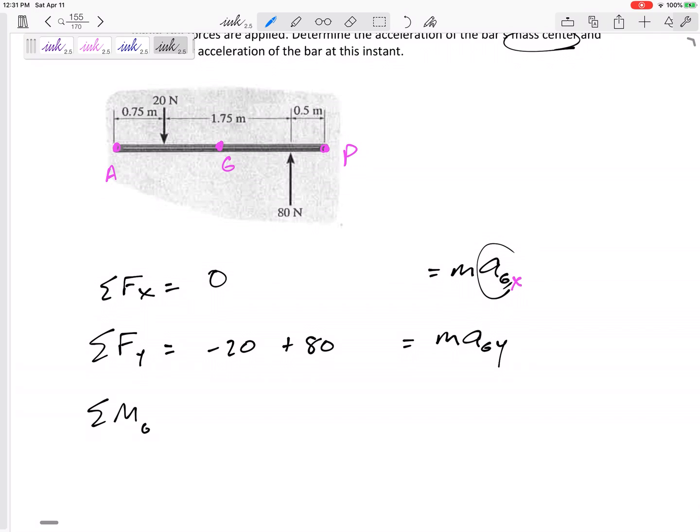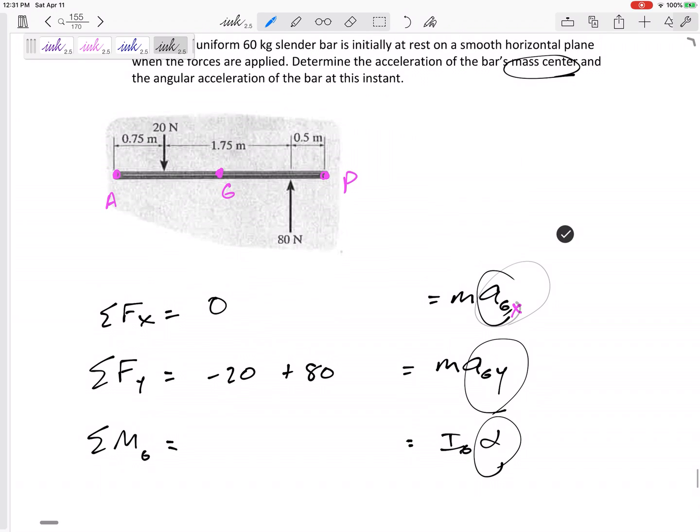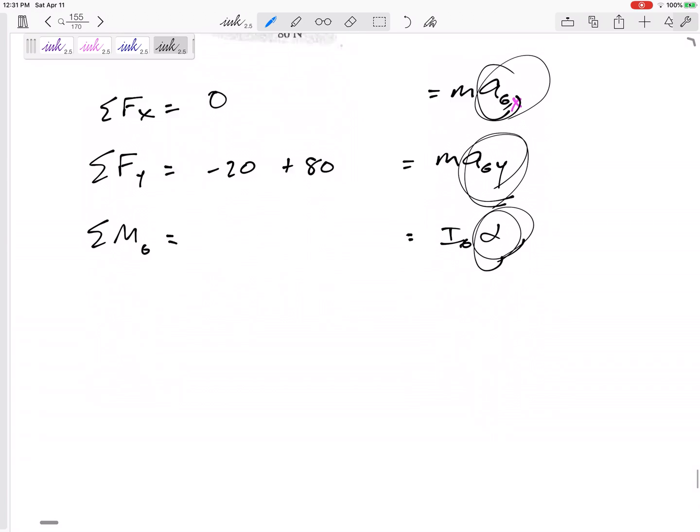And then I would sum the moments, probably about G, equals I-G-alpha. And so I could define the acceleration of G in the X, the acceleration of G in the Y, and the alpha of the bar. So it's summing the free body diagram and summing the forces and summing the moments.